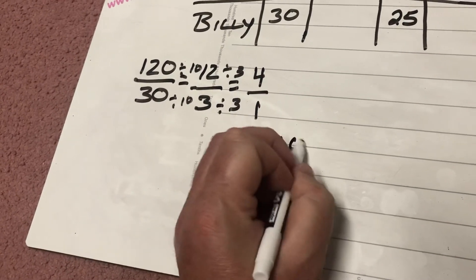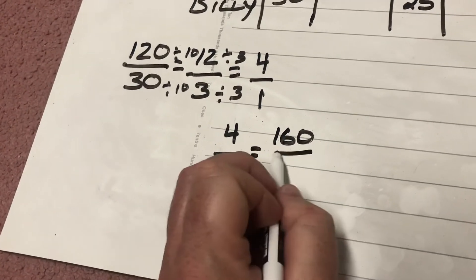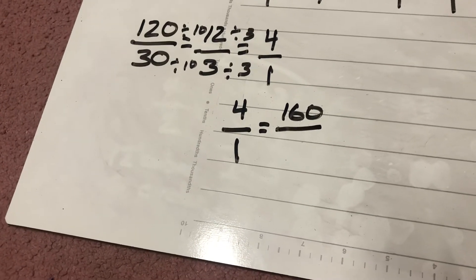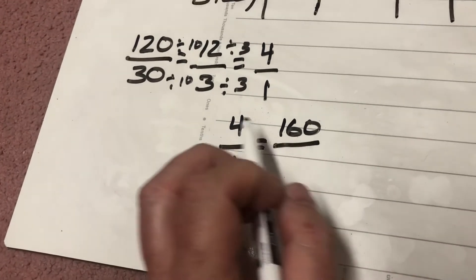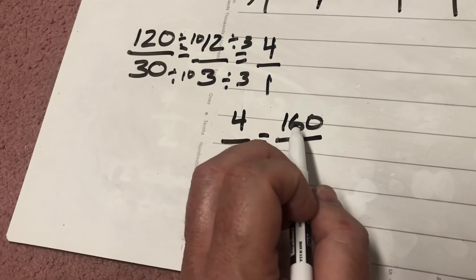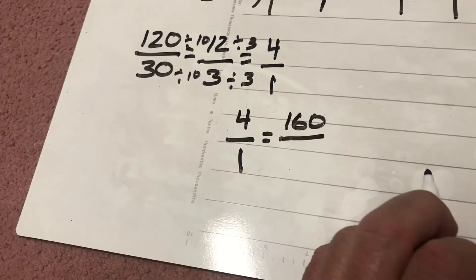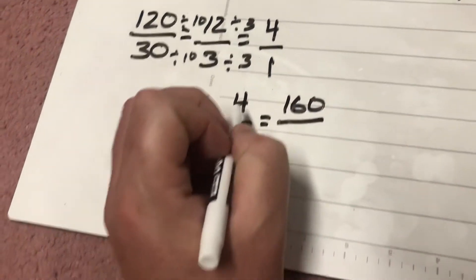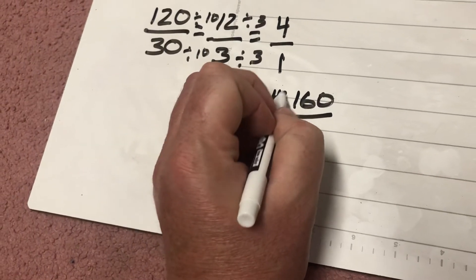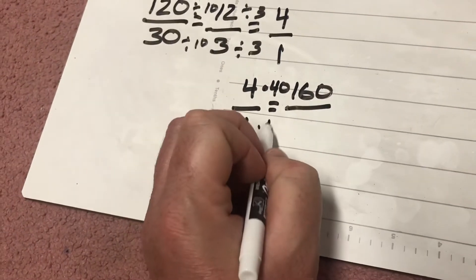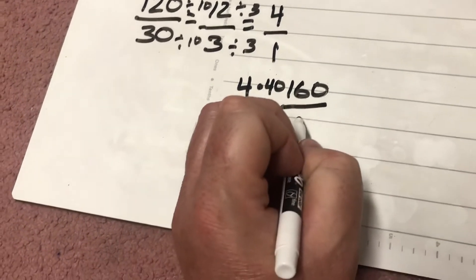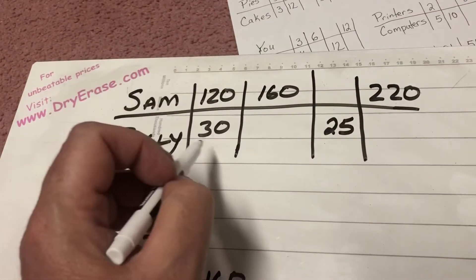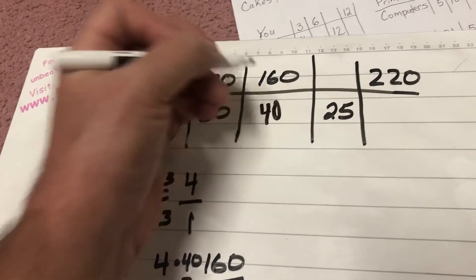Well, Sam has 160. Well, what did I do to 4 to get 160? Now remember with equivalent ratios and fractions, it's all about multiplication and division. Well, I can see, well, 4 can go into 16 four times. There's none left over because 4 times 4 is 16. But I have to remember that zero. So that tells me that I multiplied here by 40, which means I have to multiply this by 40. And 1 times 40 is 40. So when Sam has 160, that tells me that Billy has 40.